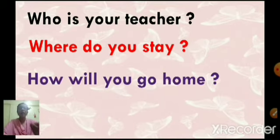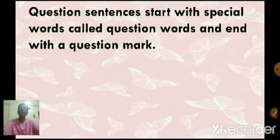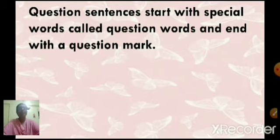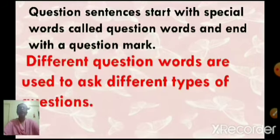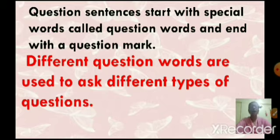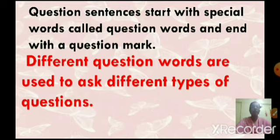Now, like who, we are asking the question. Who is your teacher? Where do you stay? How will you go home? Question sentences start with a special word called question words and end with a question mark. Different question words are used to ask different types of questions. Different question words like who, where, how — these are the different question words.